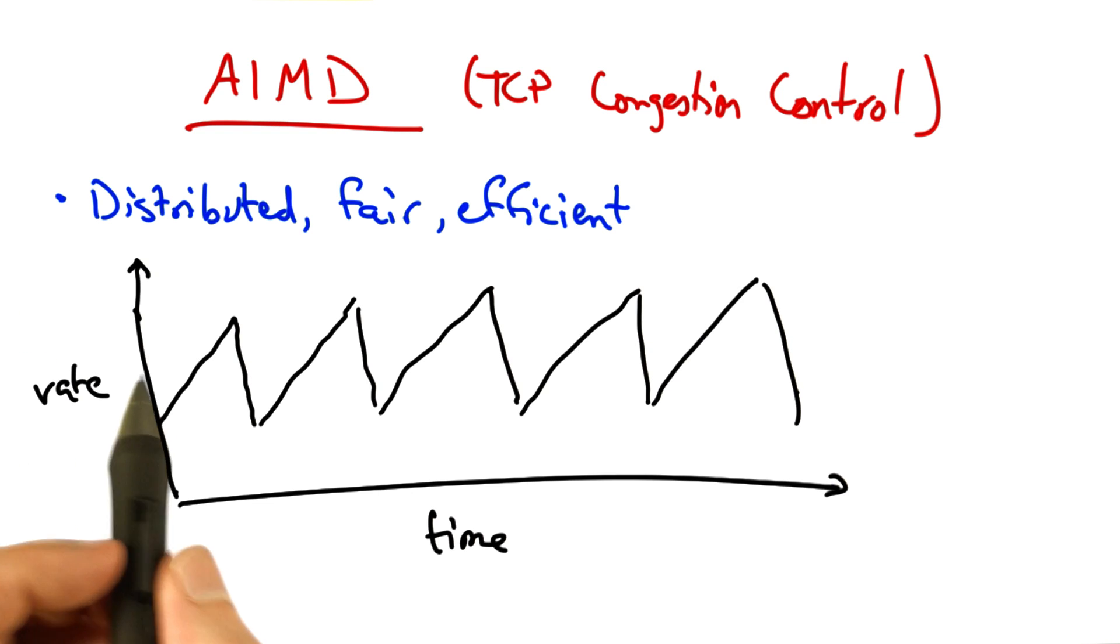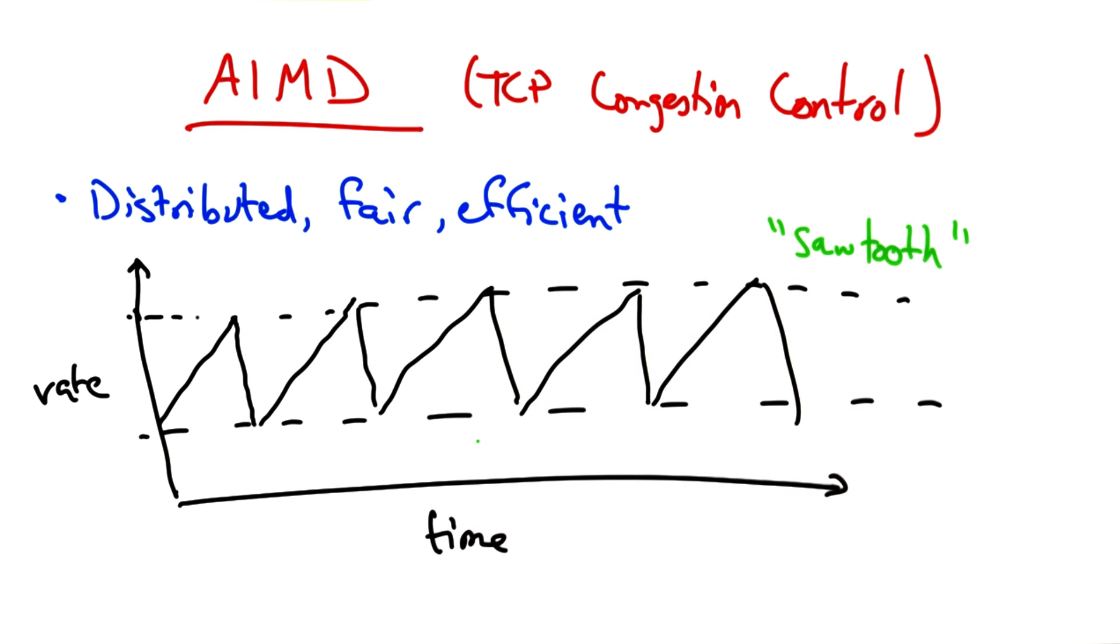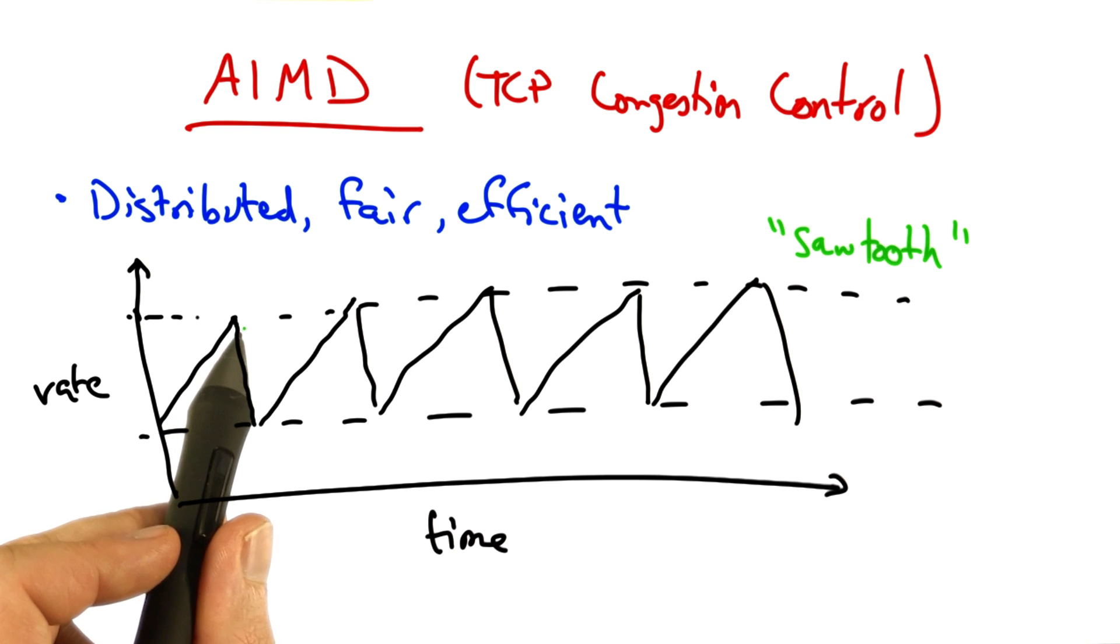To visualize this sending rate over time, the sender's sending rate looks roughly as shown. We call this the TCP sawtooth behavior, or simply the TCP sawtooth. TCP periodically probes for available bandwidth by increasing its rate using additive increase.